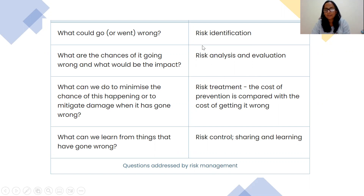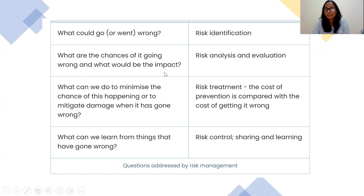These are the steps you need to follow in risk management. First, you have to identify the risks — what incidents you need to investigate. That is called risk identification: what could go or went wrong. Then you have to analyze and evaluate the risk: what are the chances of it going wrong and what would be the impact — whether it is a very common or very rare incident. Then you assess the risk, called risk scoring — whether it is very serious, moderate, low, or no-harm risk.